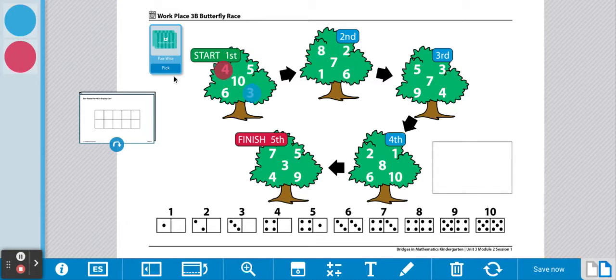Now it's player two's turn. Player two is going to draw a card. Looking at the card, this is eight. Remember, if you don't know that this is eight, count the dots. One, two, three, four, five, six, seven, eight. Player two is going to look at tree number two. And there is a number eight. So player two gets to move forward to the number eight.